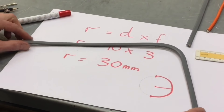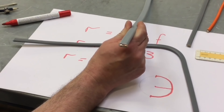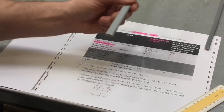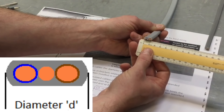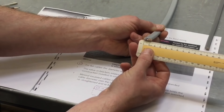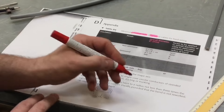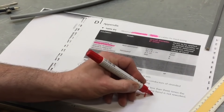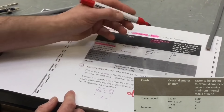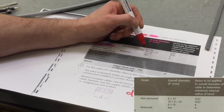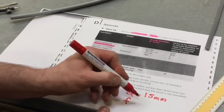Let's repeat the process for 6mm² PVC twin and CPC cable. First I measure the diameter — offering the cable against the ruler, it sits between 14 and 15mm. When unsure, I round up rather than down, so we go with 15mm. Diameter D is therefore 15mm. Since 15mm is above 10 but up to and including 25, I move to the next row in Table D5, which gives a factor of 4.